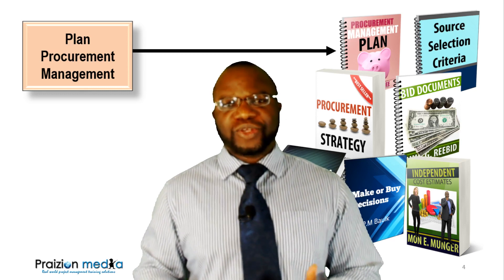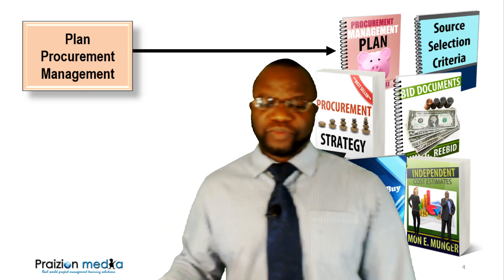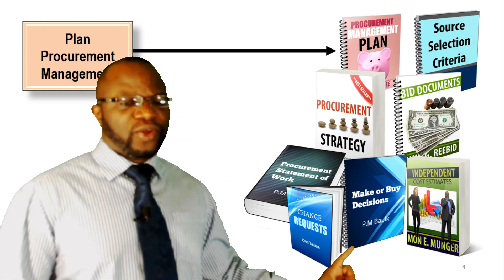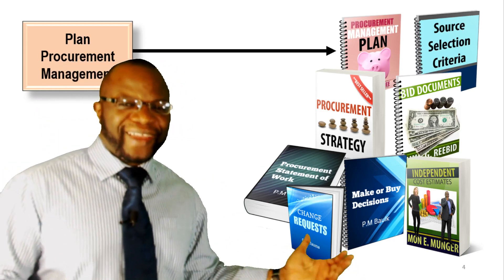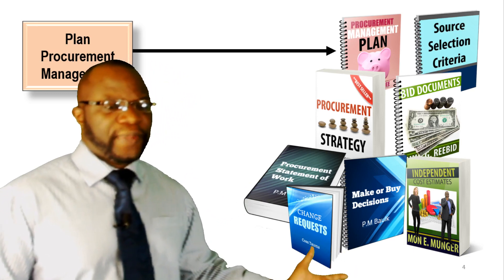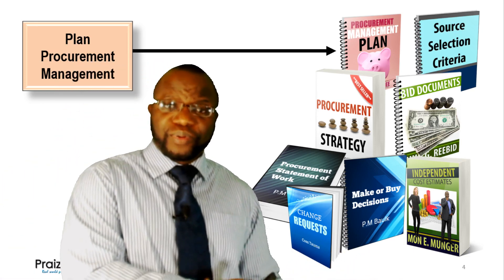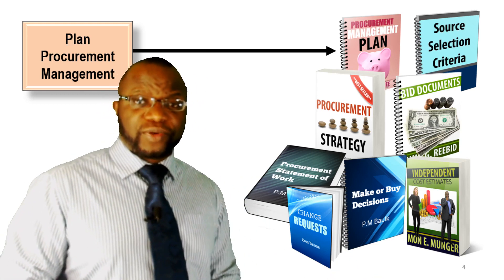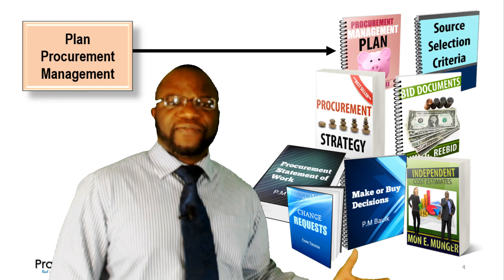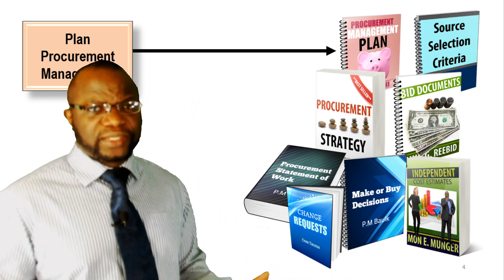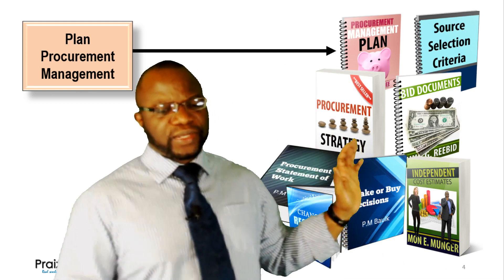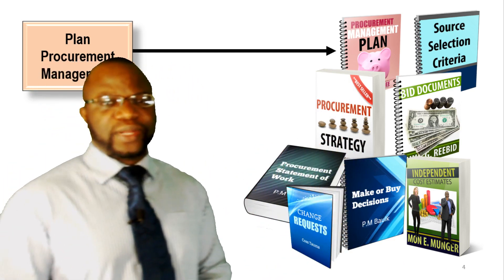Another challenge is knowing the tools and techniques. And of course, change requests — how could I forget? Change requests are not unique but are important, and that's why they're number eight. I said there were seven unique outputs — change requests are not unique, but they are important because they're an anomaly: Plan Procurement Management is a planning process, yet you get change requests out of it. This also happens in Define Activities. You wouldn't expect to see change requests in planning, but there it is. I call these unique aspects out in the book.